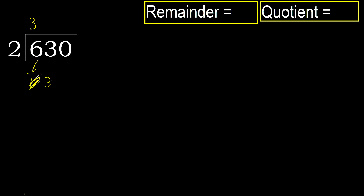Eliminate the 0. Bring down 3. 2 multiplied by 2 is 4 — that is greater. 2 multiplied by 1 is 2 — that is not greater.